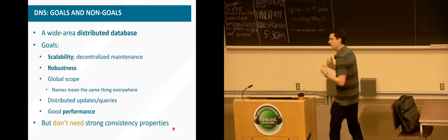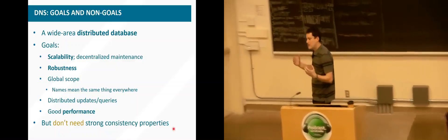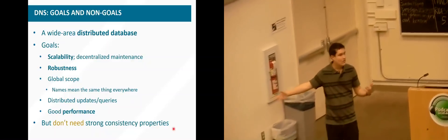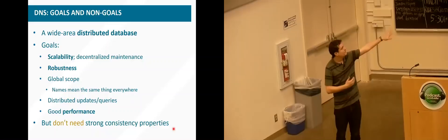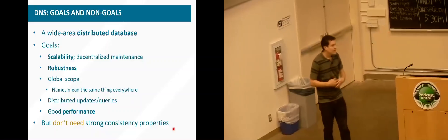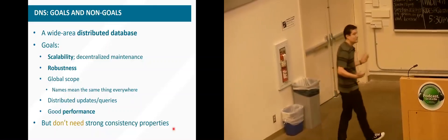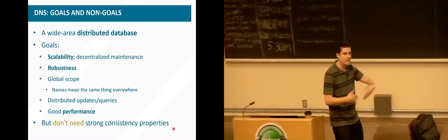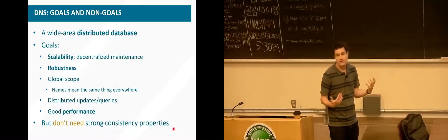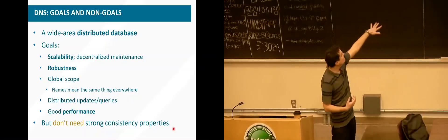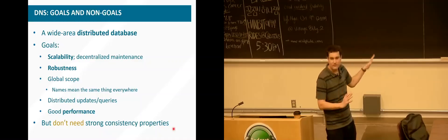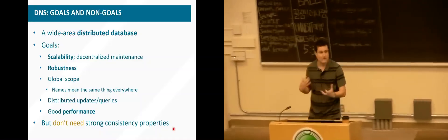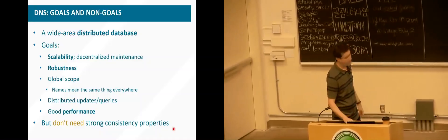What giving up strong consistency means: if at UCSD we move a server to a different part of the network and its IP address changes, we update the DNS system, but it may take hours or a day or two for the entire world to see that change. There may be a period after we've changed the mapping before everyone on the network sees it — that's what we mean by weak consistency. We're going to quantify how consistent replicas can be in a couple of weeks.